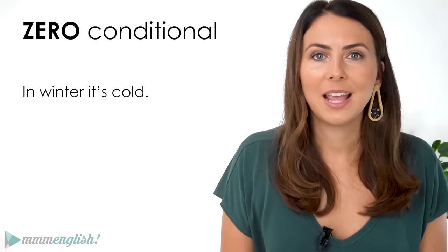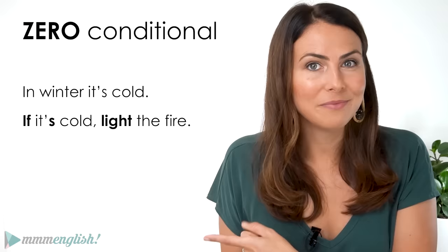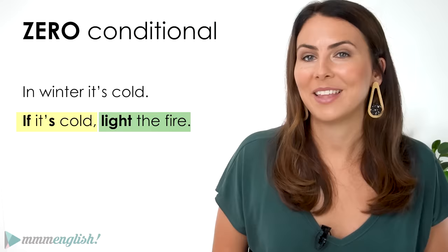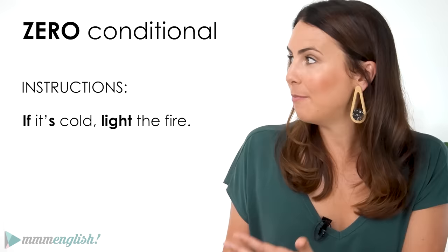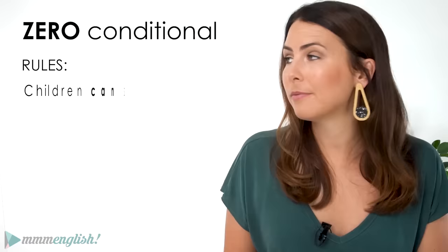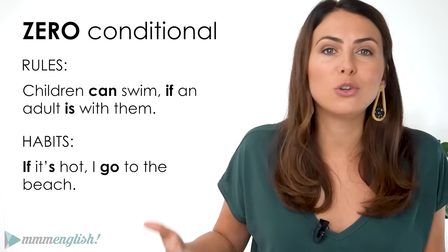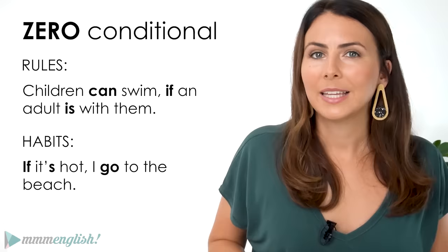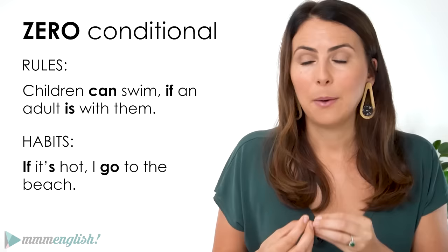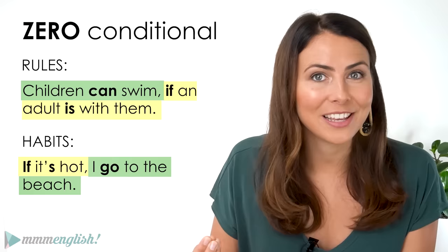But what about: 'If it's cold, light the fire'? Now we've got a condition and a result — this is a good example of how the zero conditional can be used to give instructions, using the imperative form. We also use the zero conditional to talk about rules — 'Children can swim if an adult is with them' — and habits: 'If it's hot, I go to the beach.' You can see how in all these examples the two parts of the sentence are connected, stating a fact that's only possible on the condition that the if clause occurs.